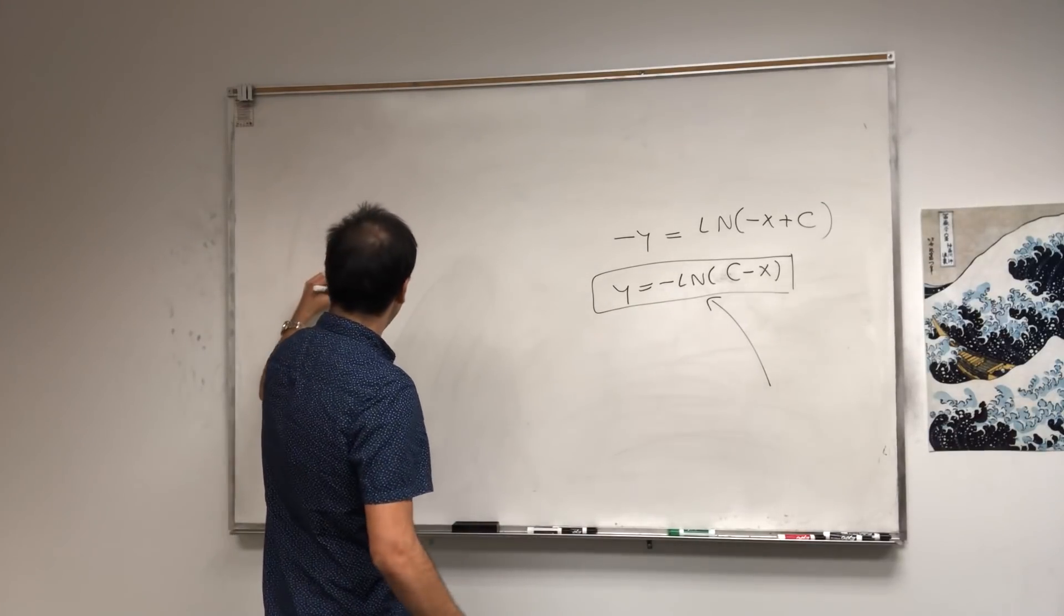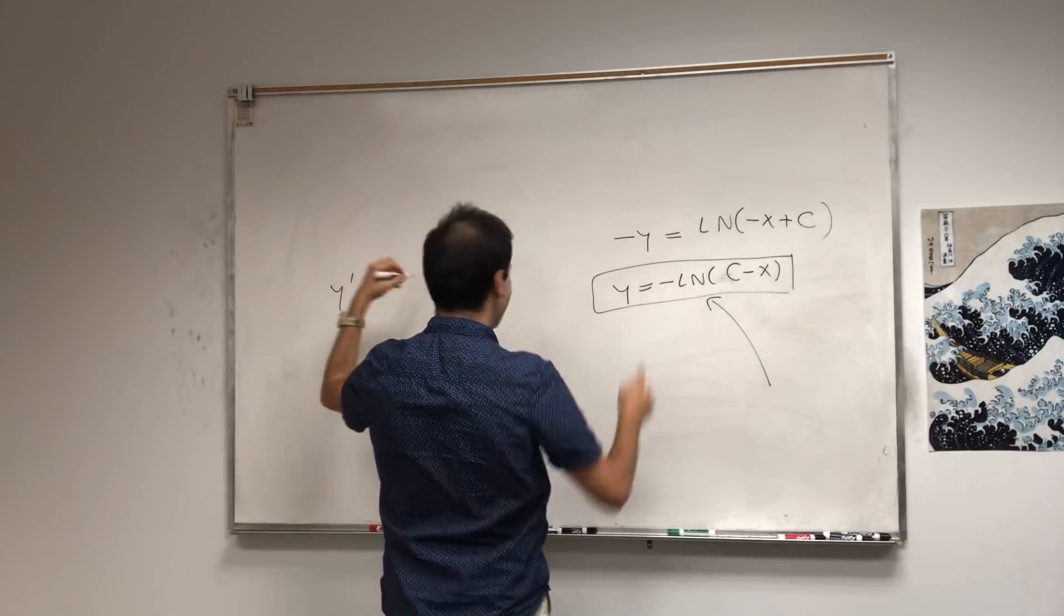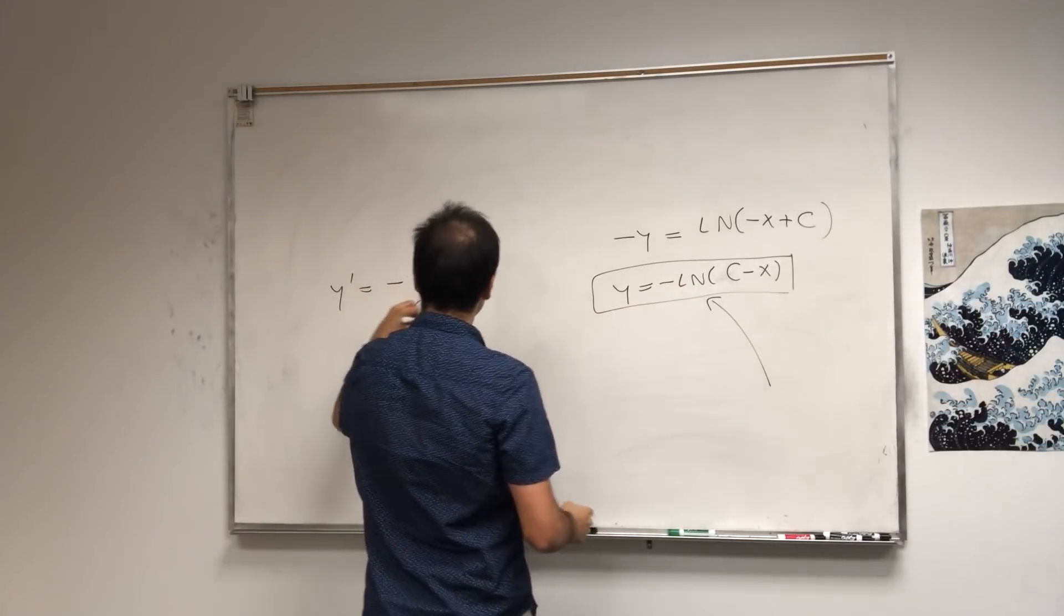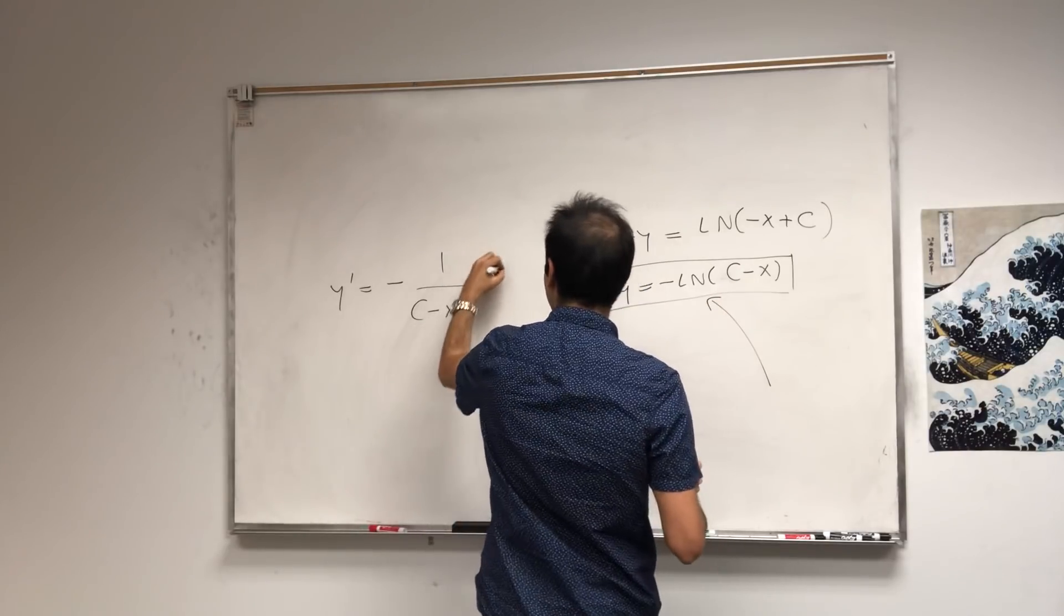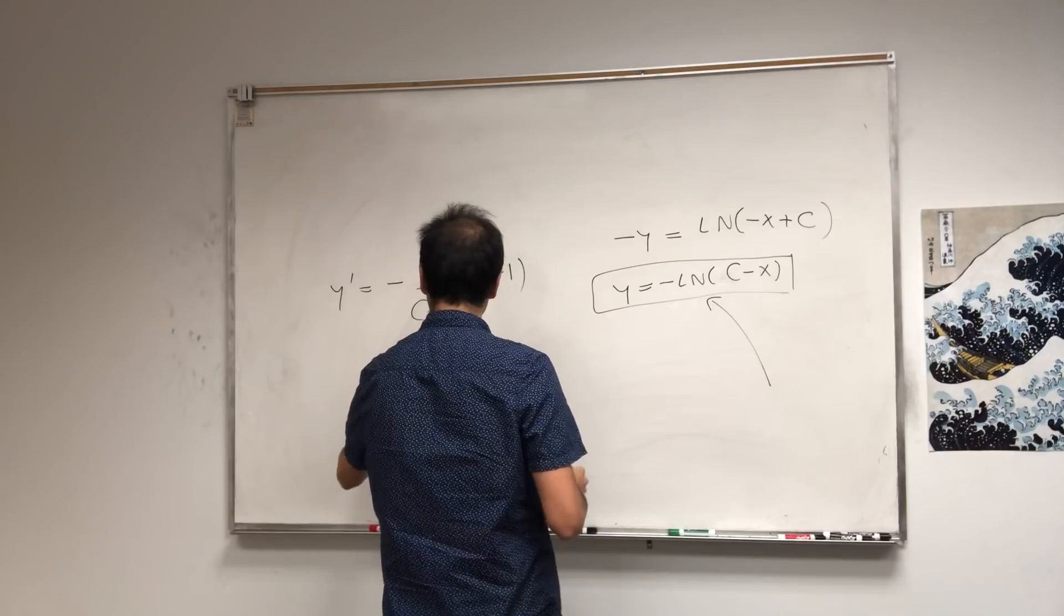But let's see. So now, differentiate this. y prime, it's minus chain rule time, 1 over c minus x. But then you chain rule that, right? So times minus 1. So this is 1 over c minus x.